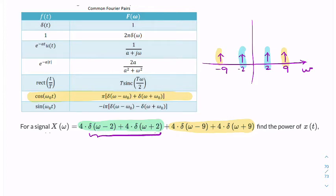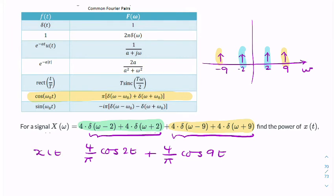So looking at that, that means that would translate to 4 over pi cosine 2t plus 4 over pi cosine 9t. And because they're added together, the linearity means that we can add the signals together. So I can write that as x of t. This is now my time domain signal, x of t.